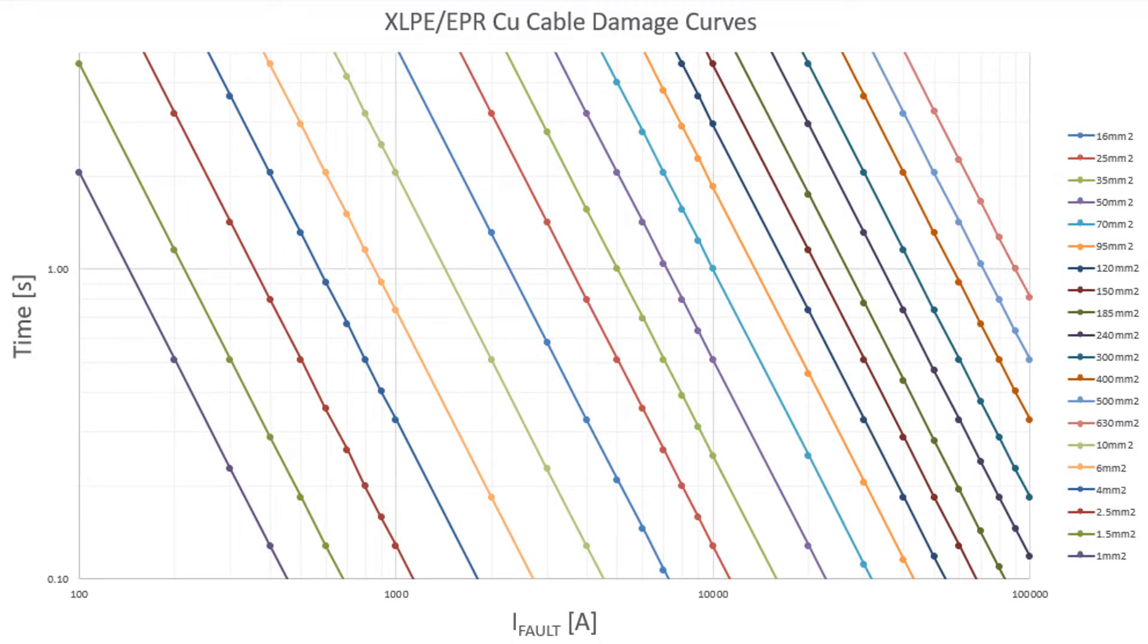Here we have a set of cable damage curves. Now how are these useful? Let's consider this green curve over here, which is the curve for a 10 millimeter squared cable. So let's say my fault current is 2000 amps. I come to the 2000 amp point on the horizontal axis, travel up to my curve, when I hit the curve I travel across to the time axis and I see I'm about 0.5 seconds. So a 10 millimeter squared cable can handle a 2000 amp fault current for about 0.5 seconds.